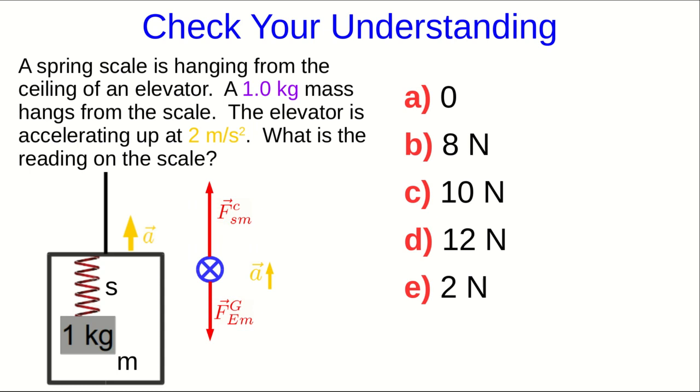And just notice that if the acceleration were zero, we would see that the force exerted upward by the spring is equal in magnitude to the gravitational force on the mass. That's why a scale works. It has to normally exert an upward force equal to the weight of the object. But that's not what's going on here because things are accelerating up, and so the spring must be exerting a larger force than the gravitational force on the mass.